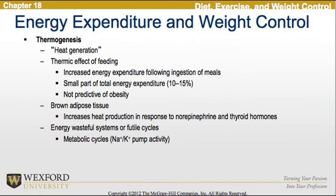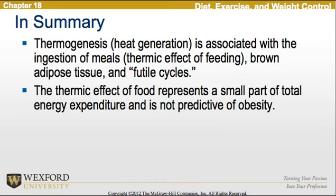Continuing with energy expenditure, thermogenesis is heat generation, including the thermic effect of feeding. This leads to increased energy expenditure following ingestion of meals, comprising approximately 10% to 15% of total energy expenditure, but it is not predictive of obesity. Brown adipose tissue increases heat production in response to norepinephrine and thyroid hormones. There are also energy-wasteful systems or futile cycles, such as the metabolic cycles of the sodium-potassium pump activity. The thermic effect of food represents only a small part of total energy expenditure and is not predictive of obesity.